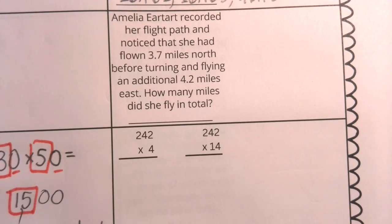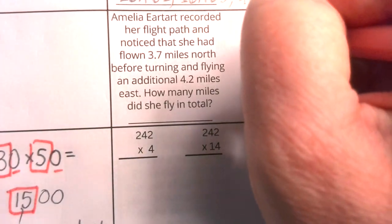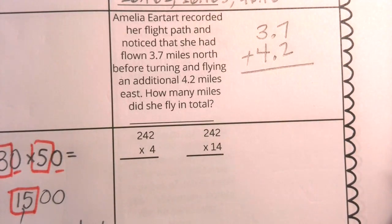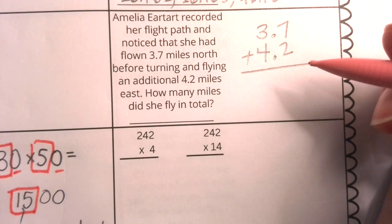Since that says in total, I know that I'm going to combine those distances. Here I have three and seven tenths. Here I have four and two tenths. I'm going to add these together. Do I have my place values aligned? Yes.